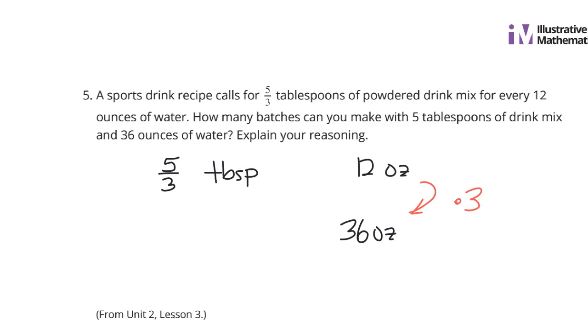And even though I could take five-thirds and multiply by 3, that actually is five tablespoons of powder drink mix. So, it looks like we could have three batches using the five tablespoons of mix and 36 ounces of water.